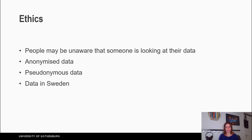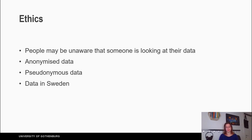Pseudonymous data are data that can be identified — they contain personal information, but this personal information is coded. So if someone has the data without the code, they cannot identify the specific individual the data are about. In the description of this video, you can find links related to data and the law that exists in Sweden.